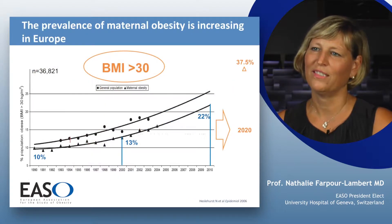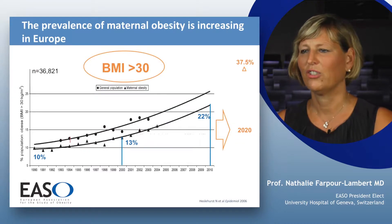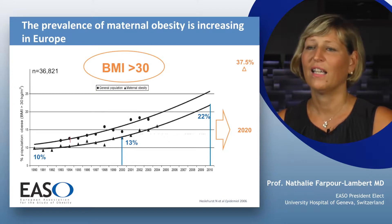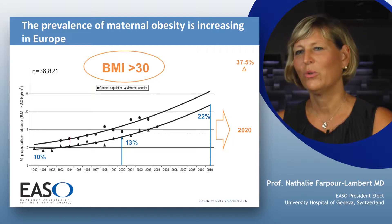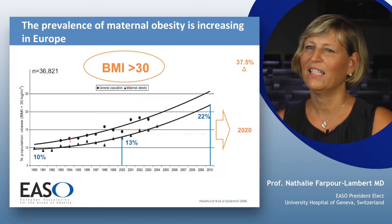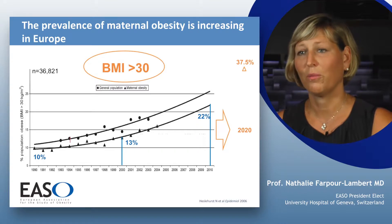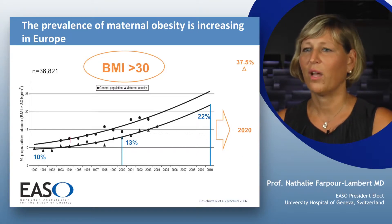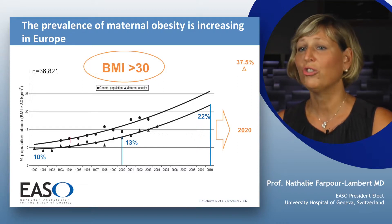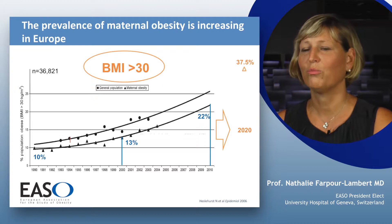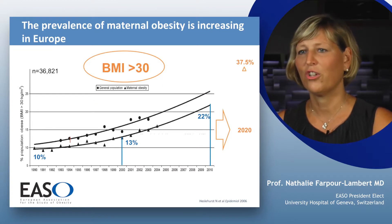There is an increased prevalence of maternal obesity in Europe. To date, one in five pregnant women are obese, and we are expecting that this number will go up to 37% in 2020. So we know now that maternal obesity is associated with increased health risk for the mothers and increased risk for developing chronic disease in the children born of mothers with obesity. There is an urgent need to develop intervention strategies to prevent both childhood obesity and non-communicable disease.